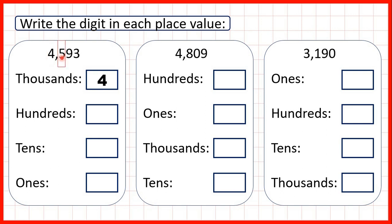Then we have our hundreds digit, so that's a five. Our tens digit is a nine. And our ones digit is a three.